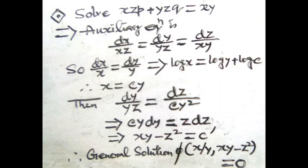Now suppose we solve the equation xzp + yzq = xy. This is in the form Pp + Qq = R. The auxiliary equation will be: dx/(xz) = dy/(yz) = dz/(xy). So the equation contains three fractions.